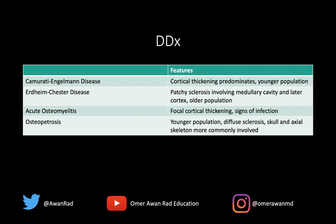Another important feature is that Erdheim-Chester disease presents typically in older individuals — patients in their 50s or 60s, even up to their 70s. It's more of a systemic disease where lipid-laden histiocytes infiltrate not only the bones but also the viscera, so you may have cardiovascular and even renal abnormalities. Acute osteomyelitis is really a case of focal cortical thickening, whereas the index case showed diffuse cortical thickening. Acute osteomyelitis may also show signs of infection such as fever, elevated ESR, soft tissue swelling, a sinus tract, or soft tissue gas on imaging — very different from what we saw in our case.